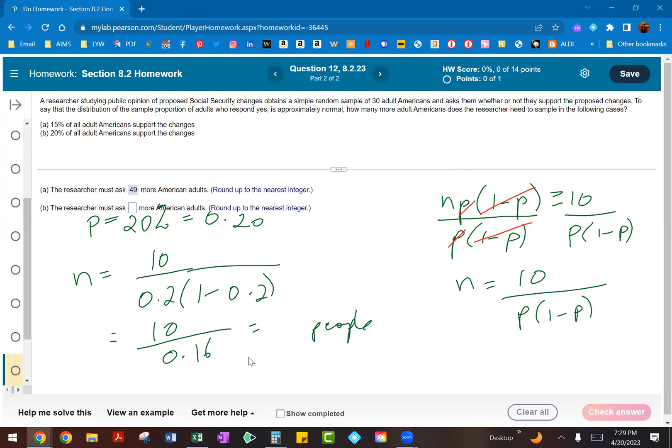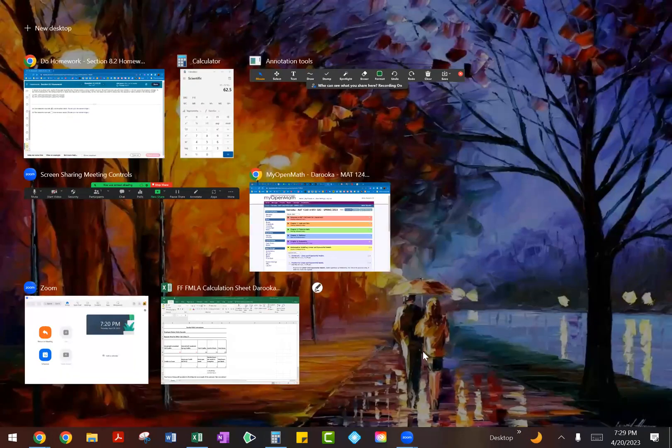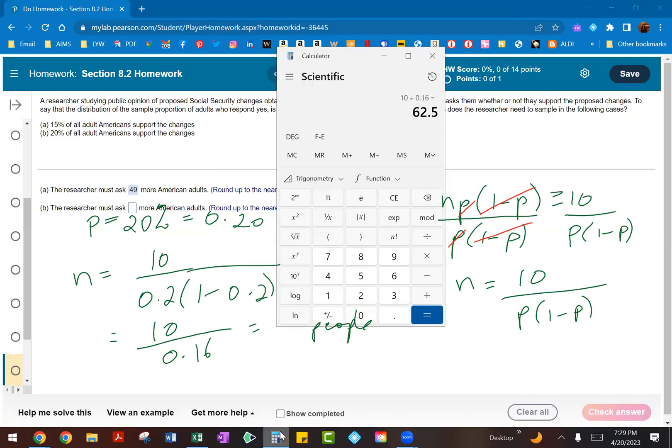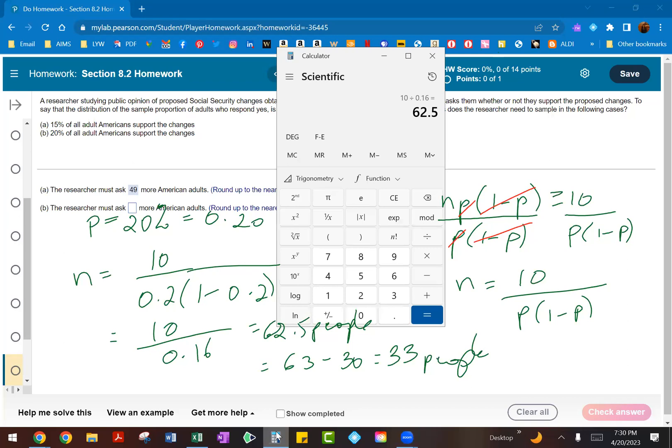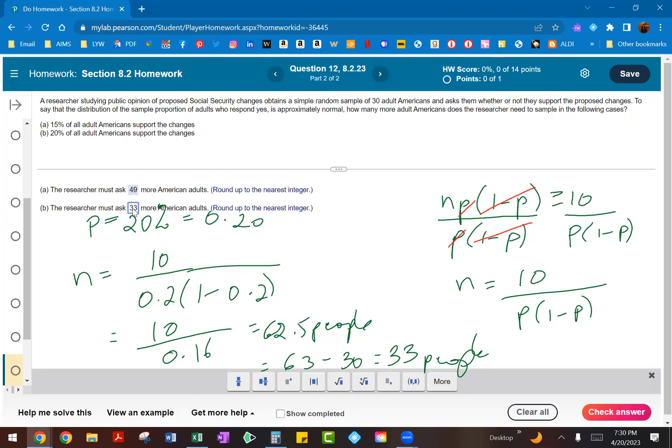So again, they're telling us to round up. So 62.5 will actually become 63 people. So 62.5 will be 63. And then again, remember to subtract that original random sample of 30 people from here. So we'll subtract 30 from 63, which will of course end up giving us 33 more people we need in our survey. So again, we've got subtract 30, which will give you 32.5, but again round up, which gives you 33.